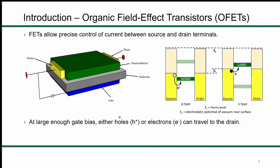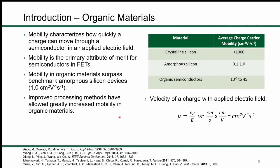The reason p-type materials are so common in organic field-effect transistors is that they're usually large aromatic molecules that are highly electron-rich. It's much easier to remove an electron — leaving behind a hole — from these molecules than to add an electron to an already electron-rich system. To give a vague idea of where organics lie on the scale: crystalline silicon can have extremely high charge carrier mobility above 1000 cm²/V·s, so organics are very unlikely to ever achieve that.